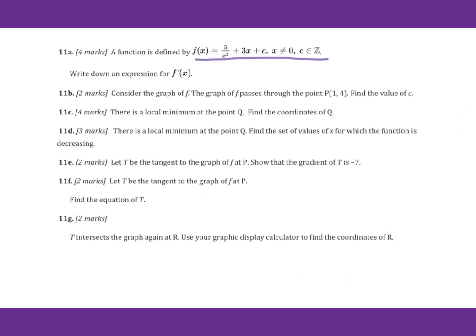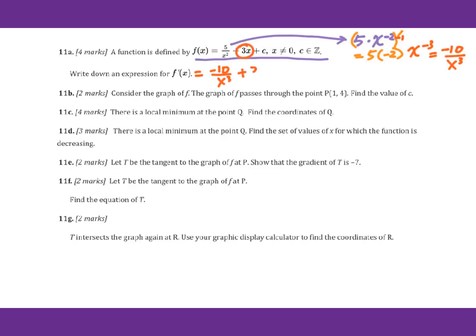Let's go to 11a. A function is defined by this. Write down the expression for the derivative. Make sure you change everything into power form. So 5 over x squared becomes 5 times x to the negative 2 power. Then we do the derivative: 5 times negative 2, then x to the negative 2 minus 1, which is x to the negative 3 power. Therefore you get negative 10 over x to the 3rd power. For 3x, the derivative will be 3. The constant number gives 0. So this will be the derivative of f of x.